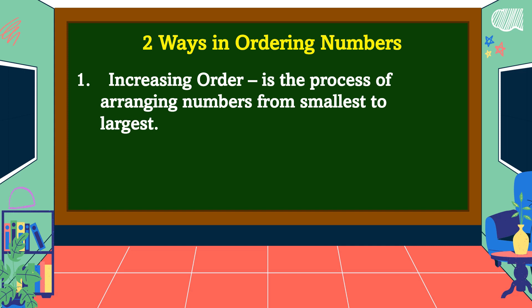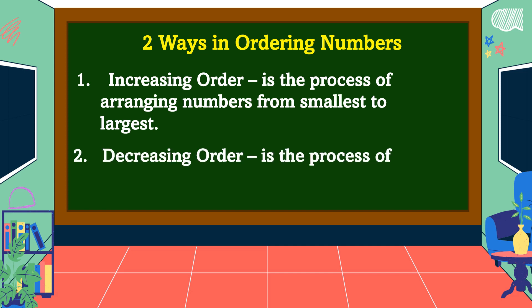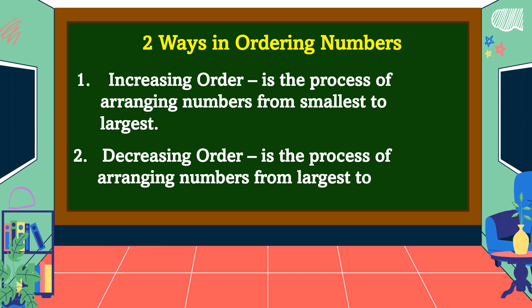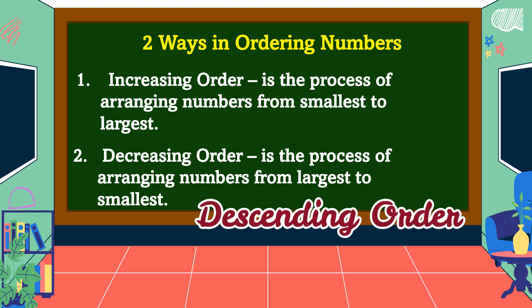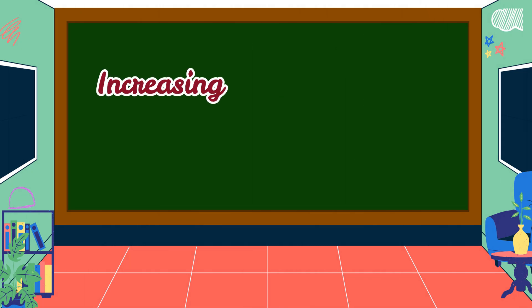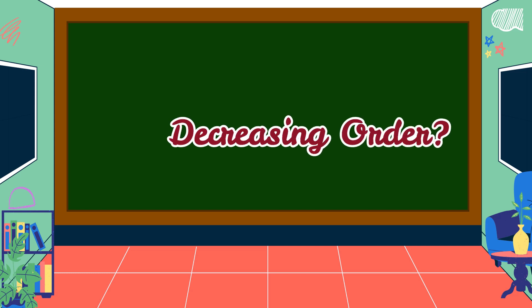The next one is decreasing order. Decreasing order is the process of arranging numbers from largest to smallest. Sometimes we call this descending order. Now we already know what increasing and decreasing order are.